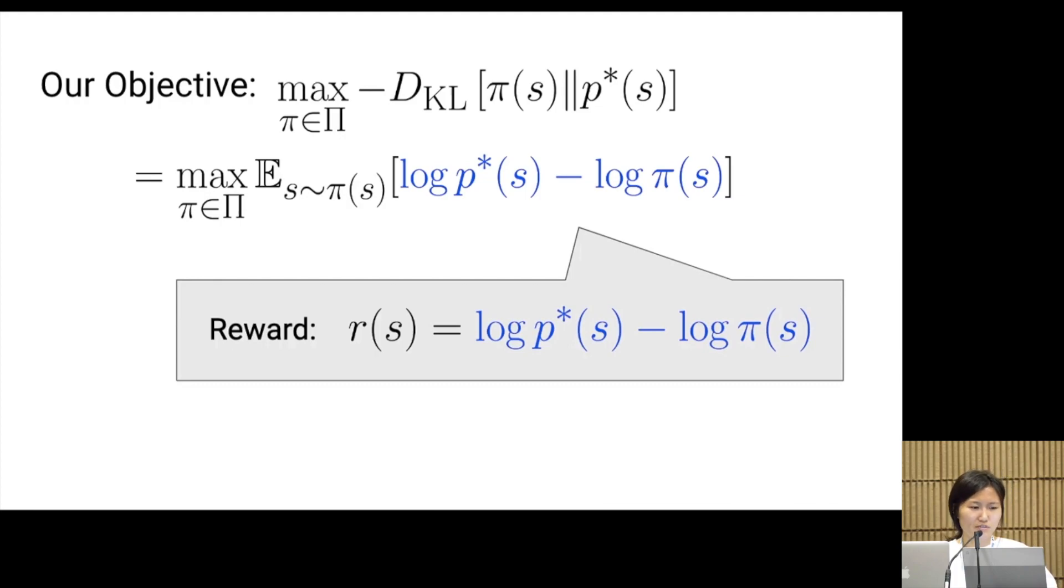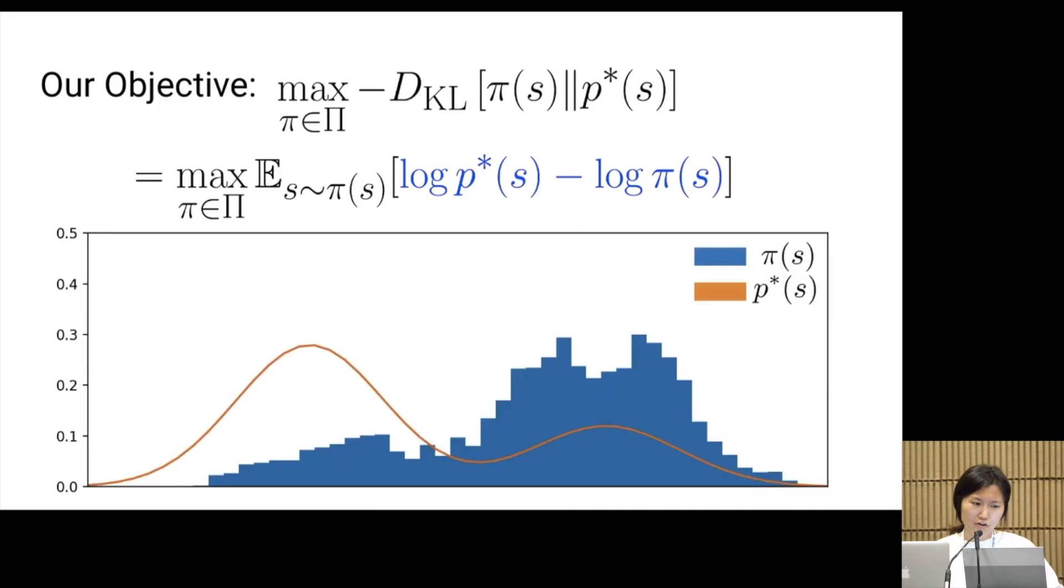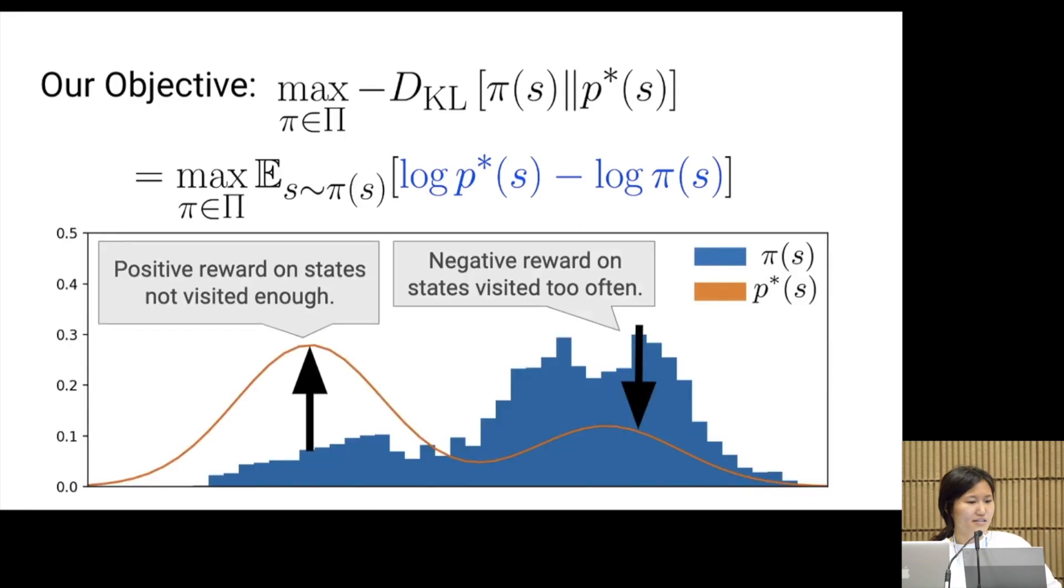Intuitively, the objective says to put more reward on states you don't visit enough and less on states that you visit too often.